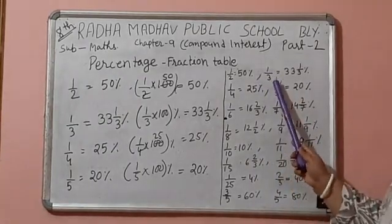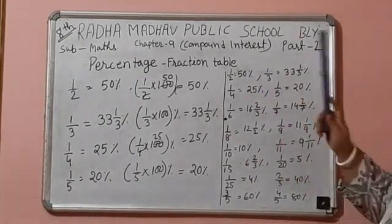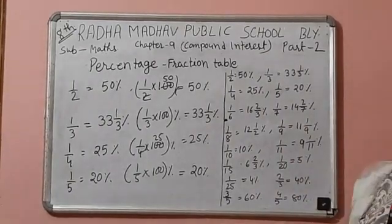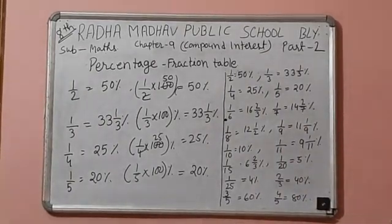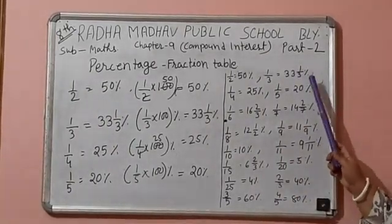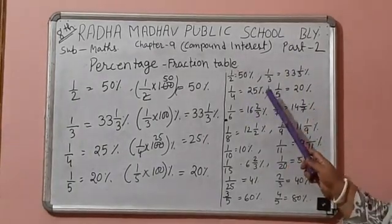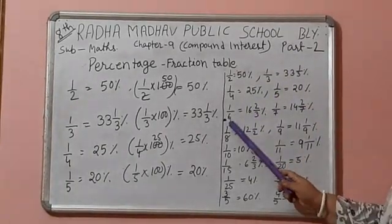Same here, you just look, have a look here. 1 by 2 is equal to 50%, 1 by 3 is equal to 33 and 1 by 3%, 1 by 4, 25, 1 by 5, 20%.